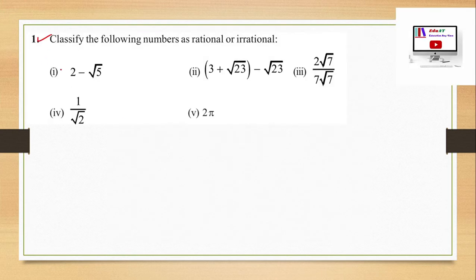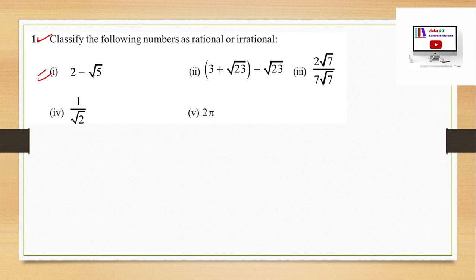Question 1: Classify the following numbers as rational and irrational. First part: the number is 2 minus root 5. Since 2 is a rational number and root 5 is an irrational number, this is the difference of a rational number and an irrational number. So this number is an irrational number.